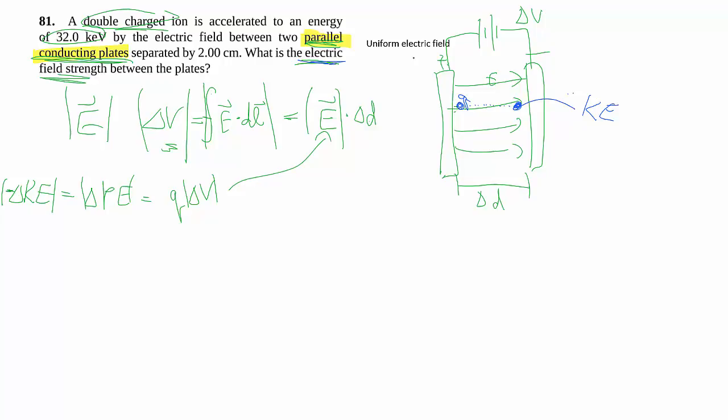So one thing to make a note of is they use this wording 'double charged.' Some of you may not be familiar with that, and so first off let me say that double charge doesn't mean two coulombs. It means that you're either having two extra electrons or missing two electrons. Double charge in this sense means the charge is the same as two elementary charges.